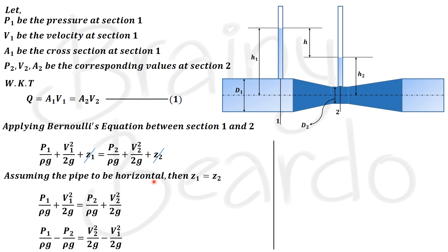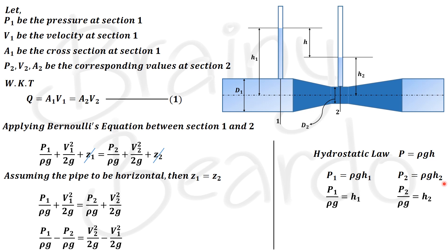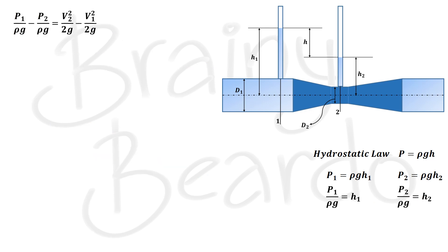The piezometer works on the principle of hydrostatic law: p = ρgh. Applying this, p1 = ρg·h1 and p2 = ρg·h2, so p1/ρg = h1 and p2/ρg = h2. Substituting into the rearranged Bernoulli equation: h1 − h2 = v2²/2g − v1²/2g. From the diagram, h1 − h2 = h, so h = v2²/2g − v1²/2g. This is equation number 2.